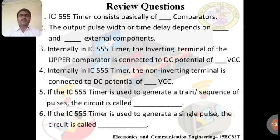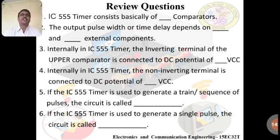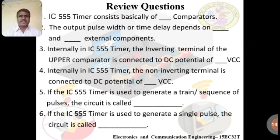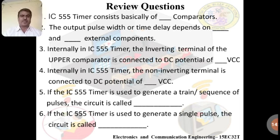Fourth: internally, the non-inverting terminal of the lower comparator is connected to a DC potential of how much VCC? The answer is one-third VCC. The upper comparator input is at two-thirds VCC and the lower trigger input is at one-third VCC. Fifth: if the IC 555 is used to generate a train or sequence of pulses continuously, the circuit is called an astable multivibrator.